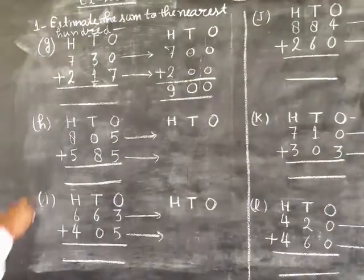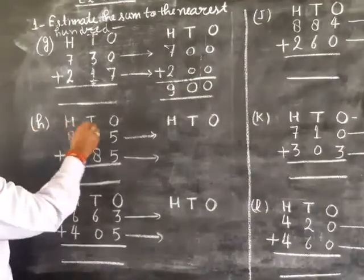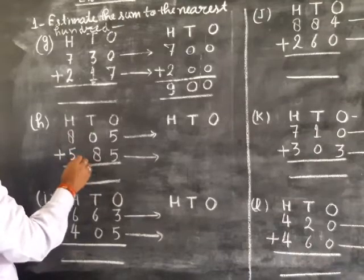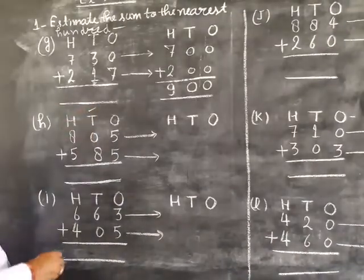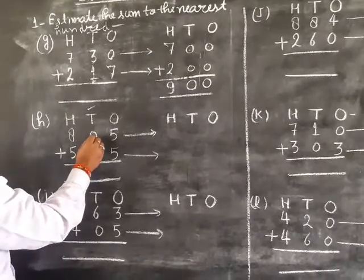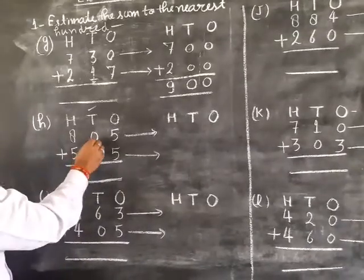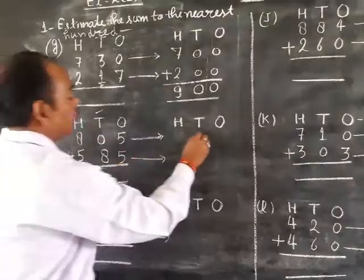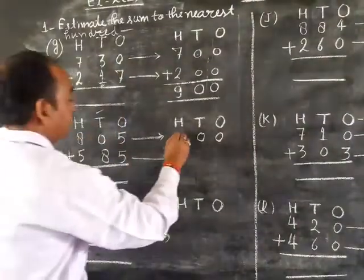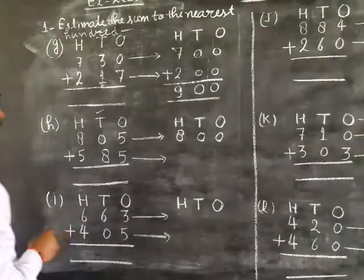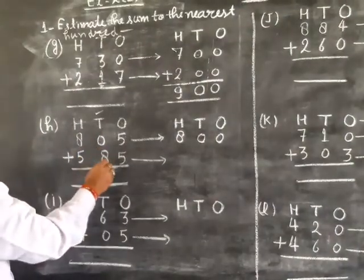Next part number (b): 805 plus 585. We look at tens place digit, which is 0. 0 is less than 5, so it's replaced by 0 and the hundreds digit stays the same: 800.